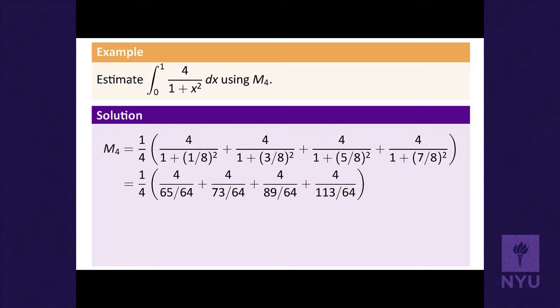That fraction is an approximation to the integral. More divisions would mean a better approximation — we could go to M8 or M16. When computers do numerical integration, they're often using some kind of rule such as the midpoint rule.